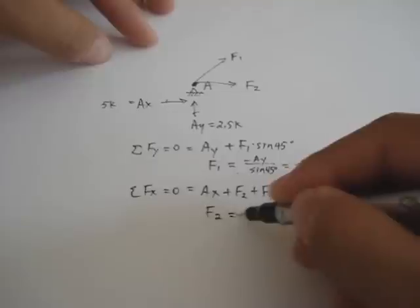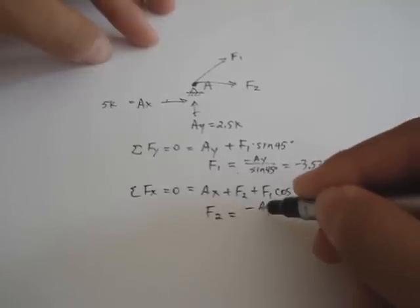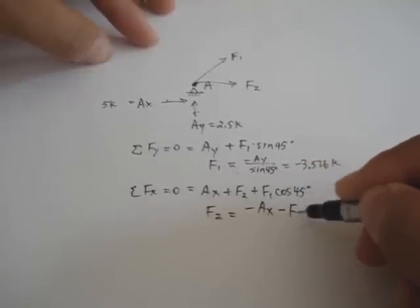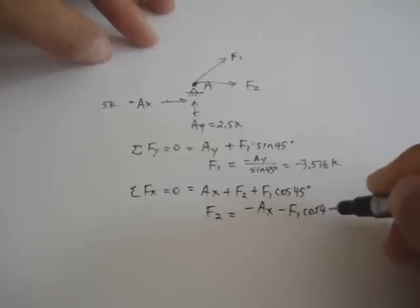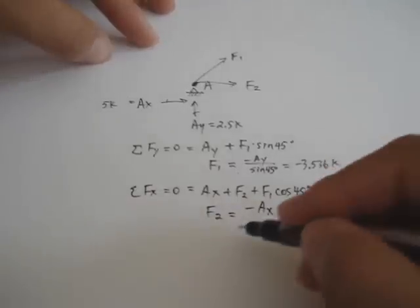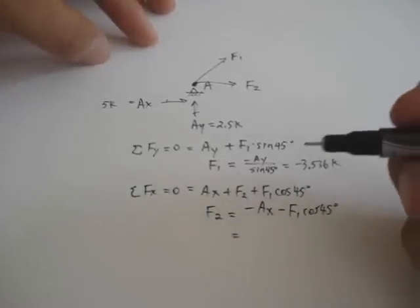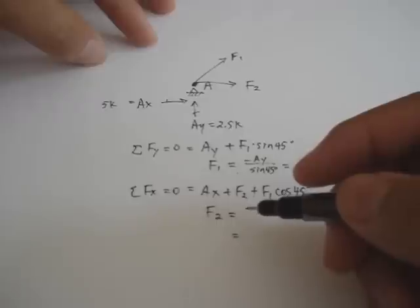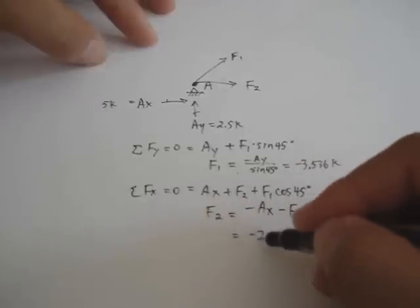Solve this equation for F2. That's equal to minus AX minus F1, the cosine of 45 degrees. Apply that in your calculator. That number turns out to be minus 2.5 kips.